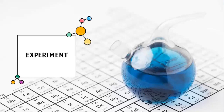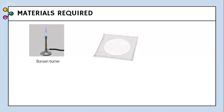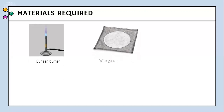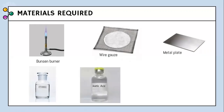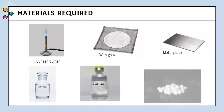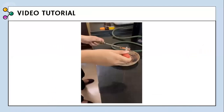Now moving on to the experiment. The materials required in this experiment are a Bunsen burner, a wire gauze, a metal plate, ethanol, acetic acid and naphthalene balls.